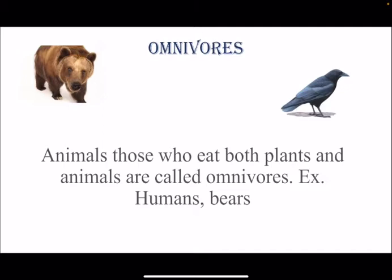The third group is omnivores. Animals that eat both plants and animals are called omnivores. Examples of this category are humans, bears, and crow.